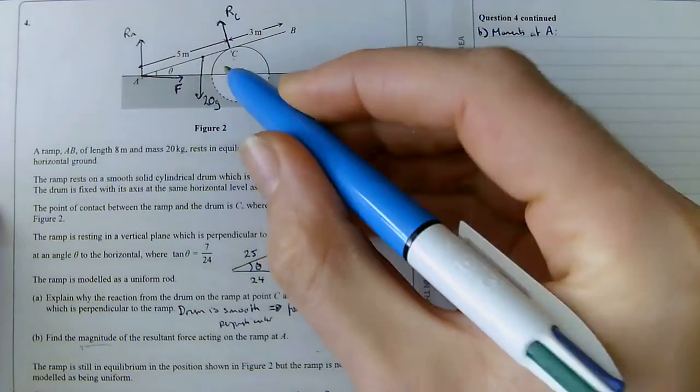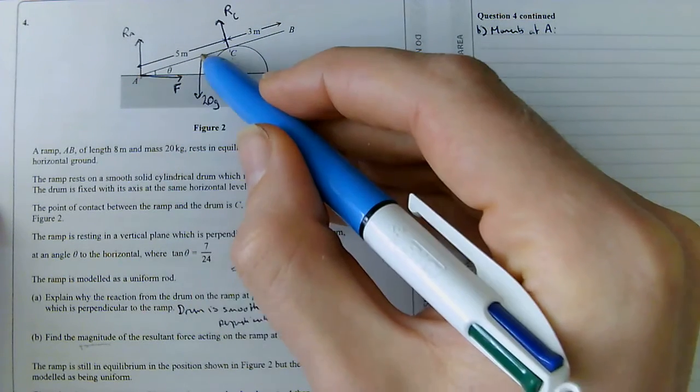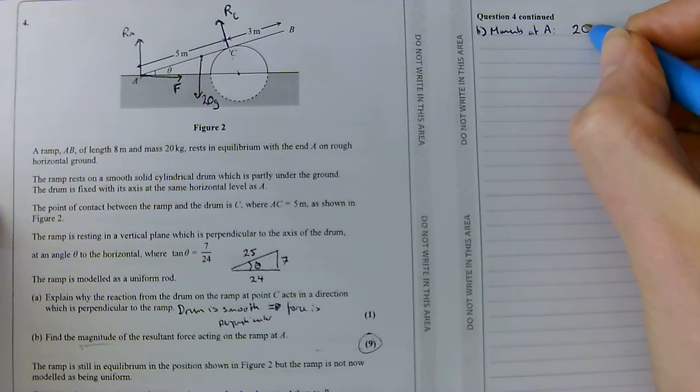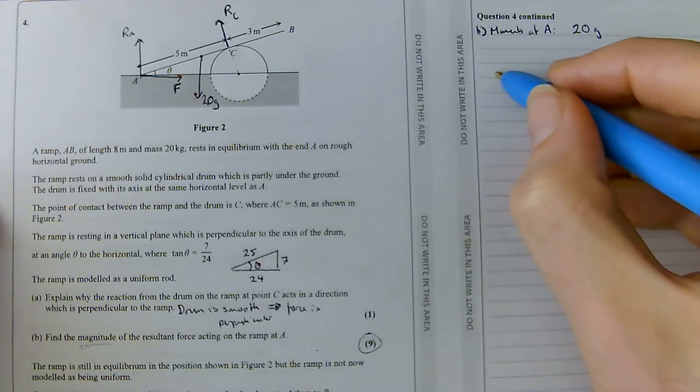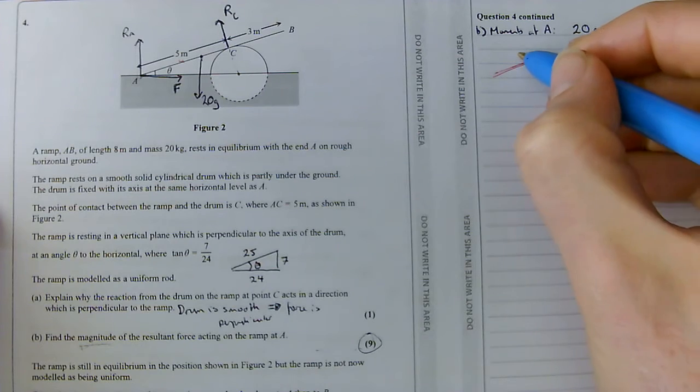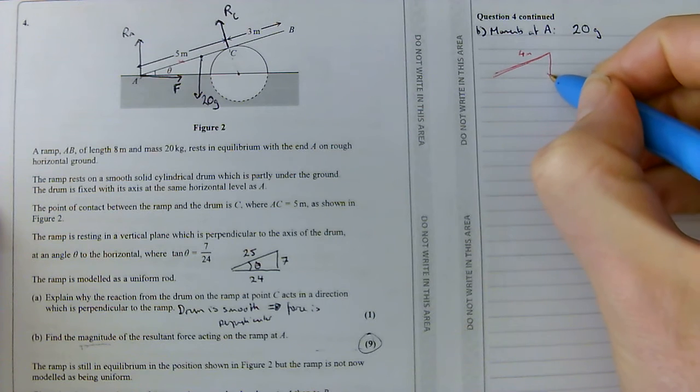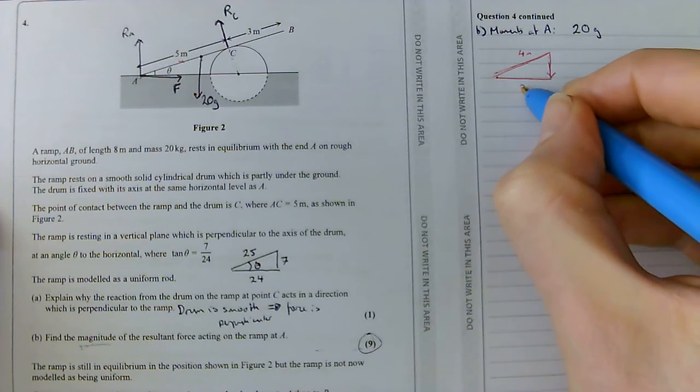We're going to start with our clockwise moment, the only clockwise component. I can ignore R_A and F because they're no distance away from the pivot point. I'm going to look at my 20G. So moment is going to be the weight, 20G, times by the distance. And remember this is the shortest distance, the perpendicular distance from the pivot point. So I'm just going to draw out this triangle here.